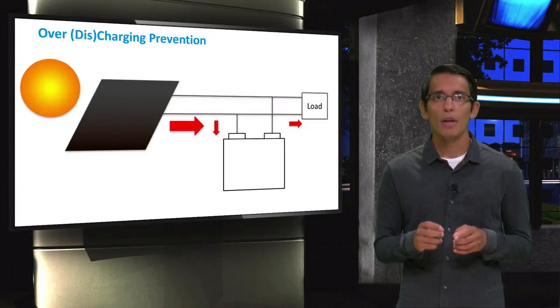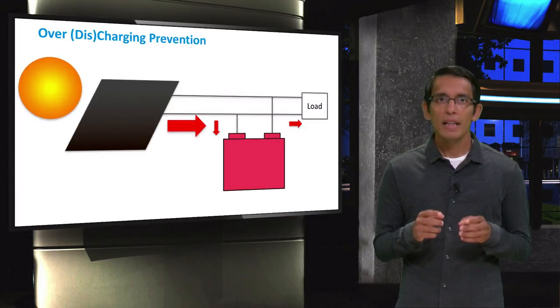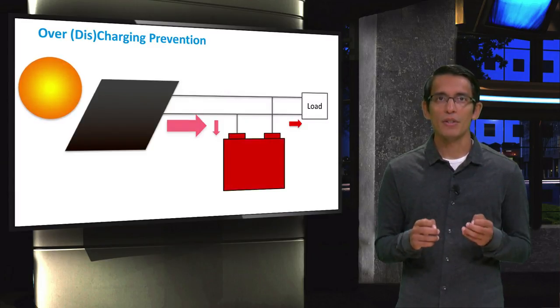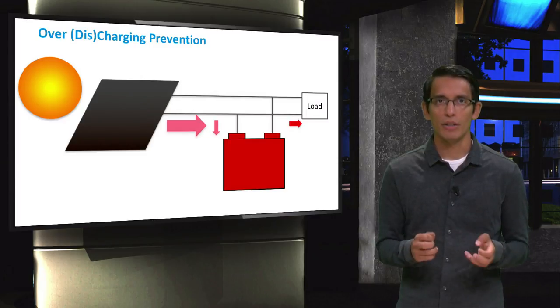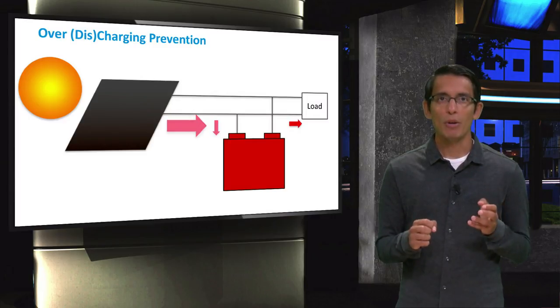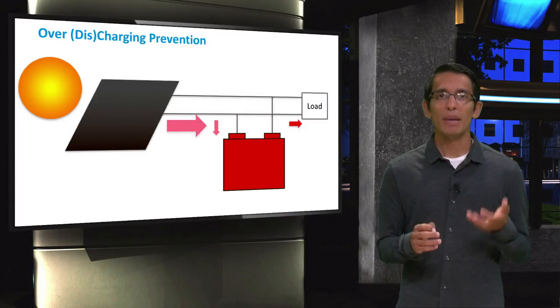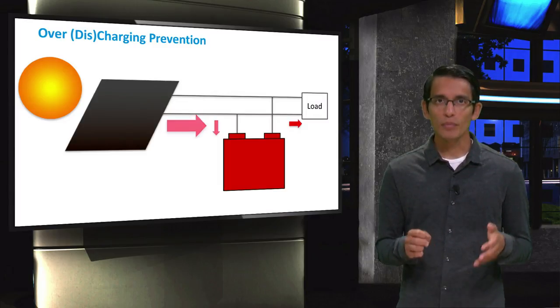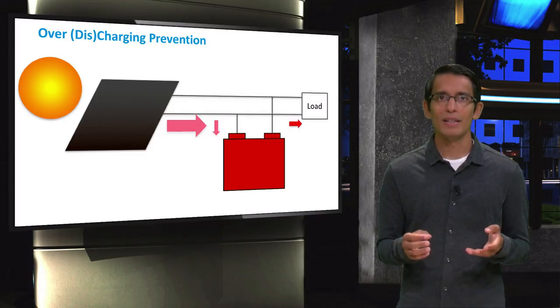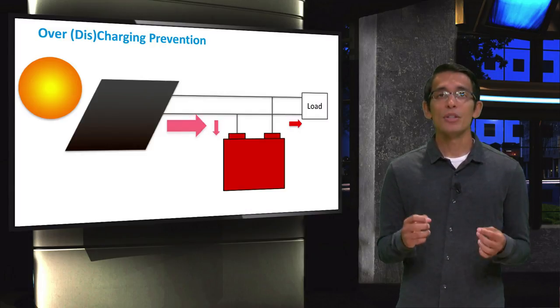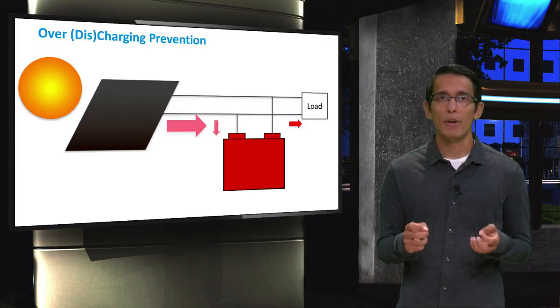Suppose in the same scenario, when the sun intensity is very high, the battery will get charged very fast due to the PV module producing higher currents. When this battery reaches its full capacity, the PV module will still continue to produce current feeding into the battery. At this point, the battery will begin to get charged beyond its capacity. This is called overcharging of the battery.